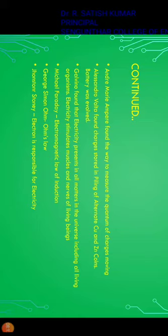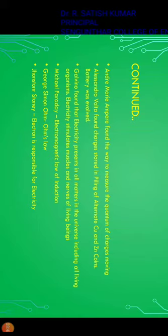Around 1775, Andrew Mary Ampere found a way to measure the quantum of charges moving. Then by 1800, Alessandro Volta found that when copper and zinc coins are piled alternately, electrical charges can be stored — this was the first battery, and the battery was invented by Alessandro Volta.